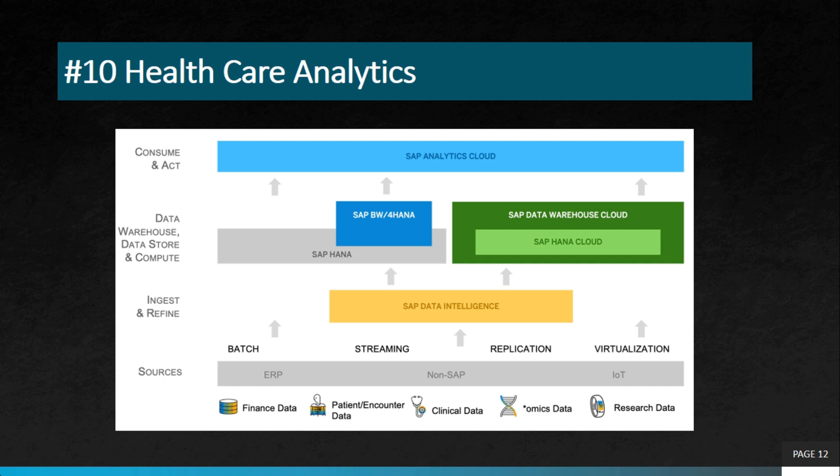Overall, SAP HANA provides a powerful platform for businesses to gain insights into their operations, optimize processes, reduce costs, and improve decision making. With its real-time analytics, data warehousing, predictive analytics, machine learning, and IoT capabilities, businesses can leverage SAP HANA to stay ahead of the competition and transform their operations. I hope this video was helpful — we'll meet in another video, thank you.